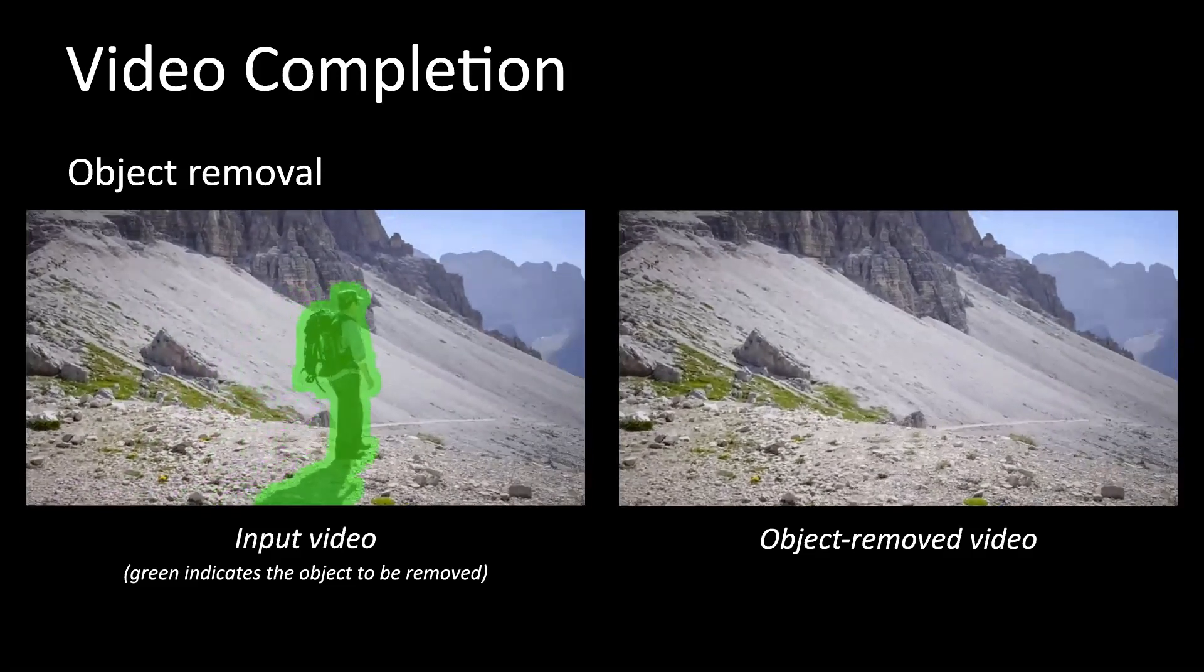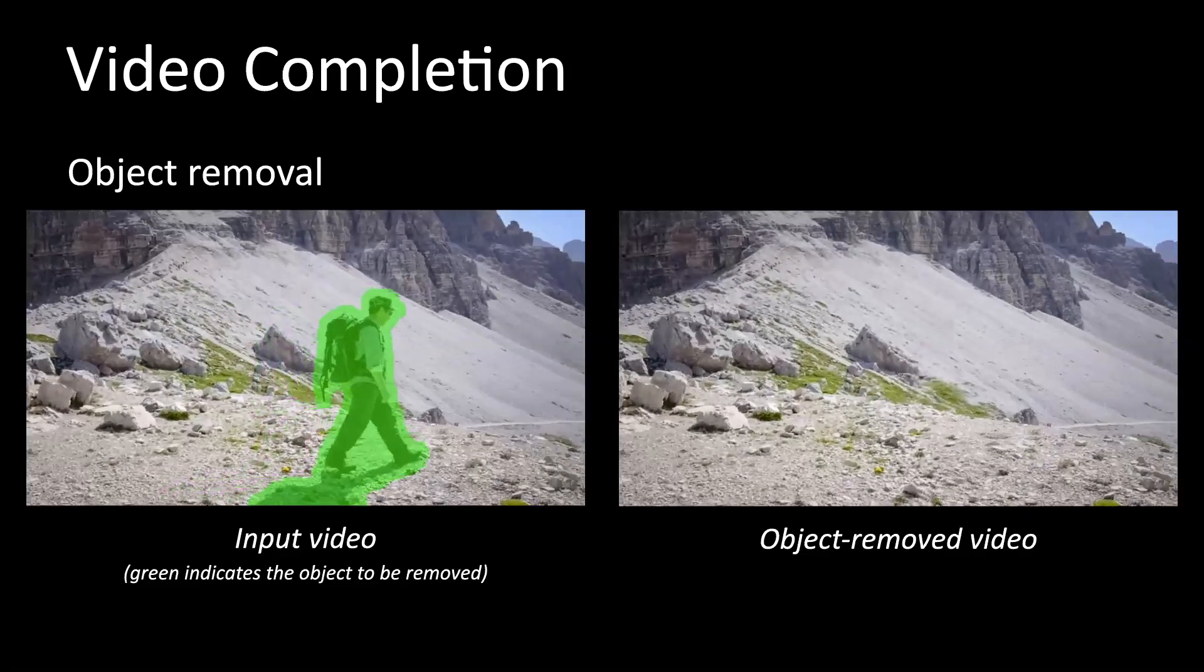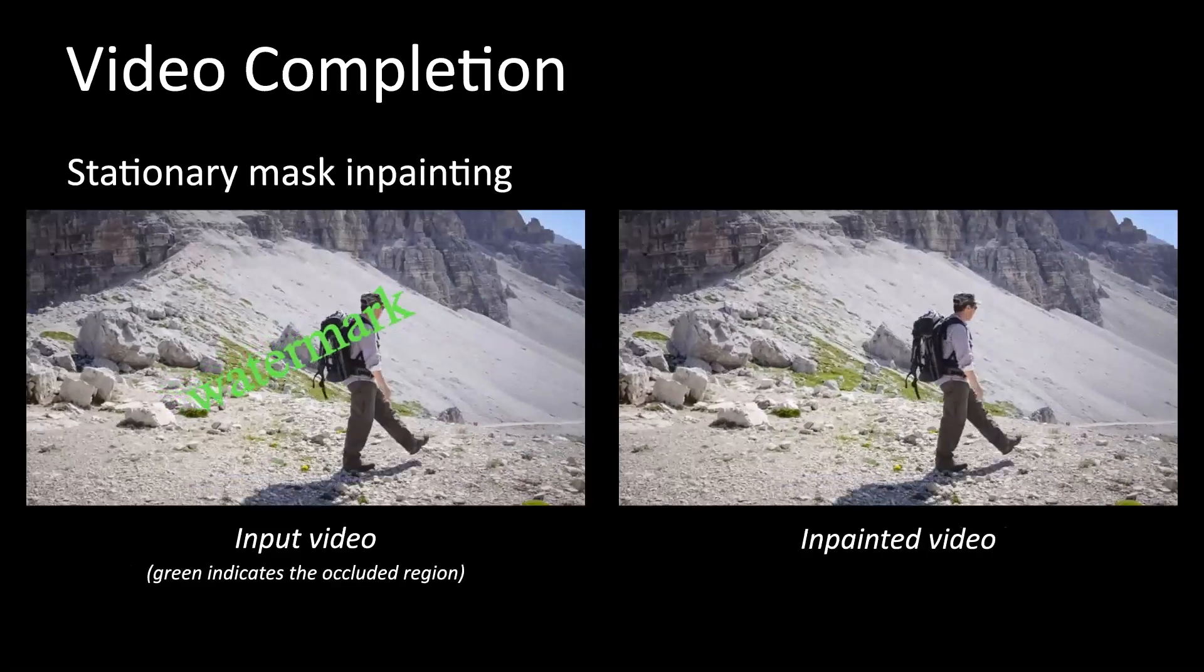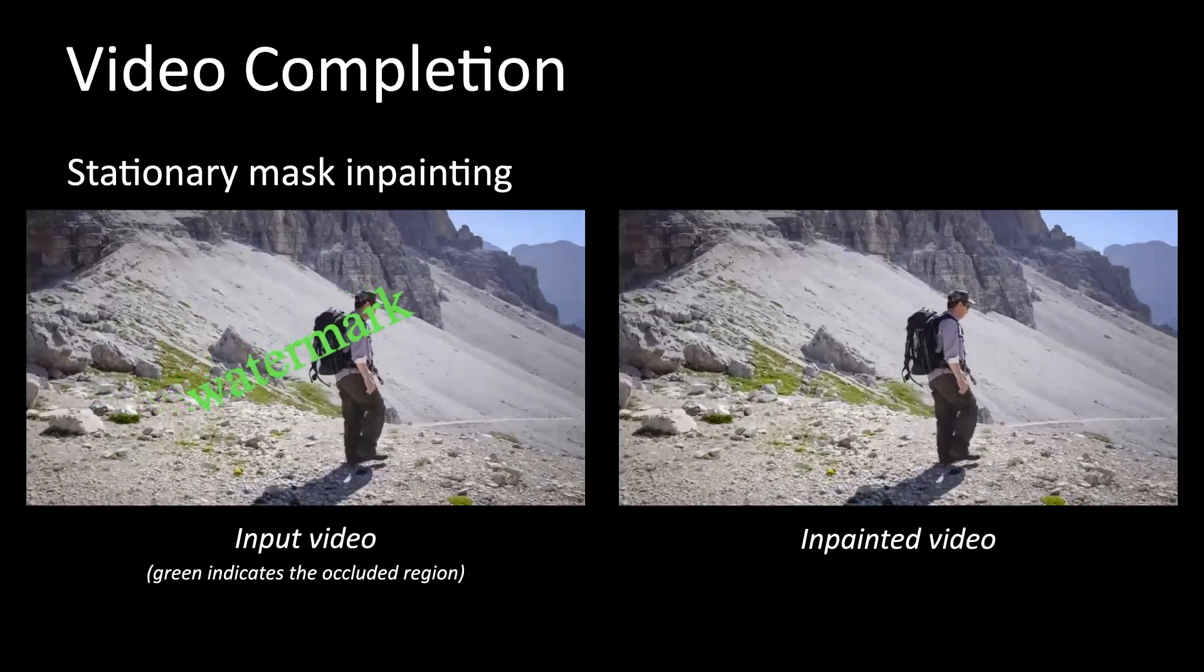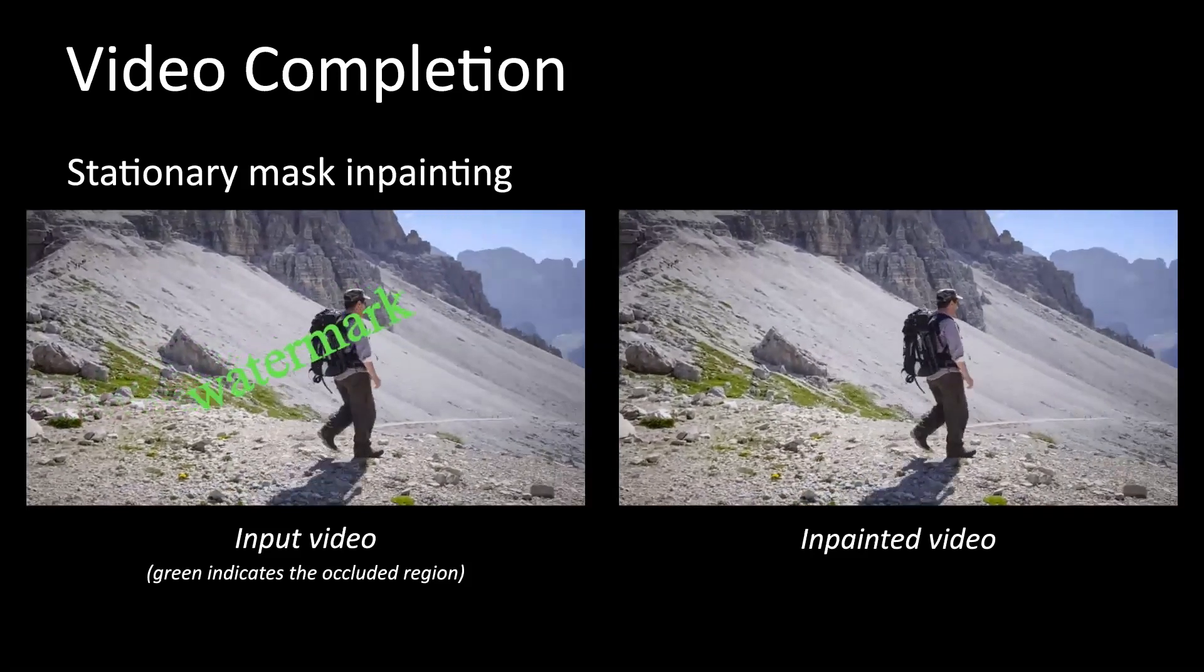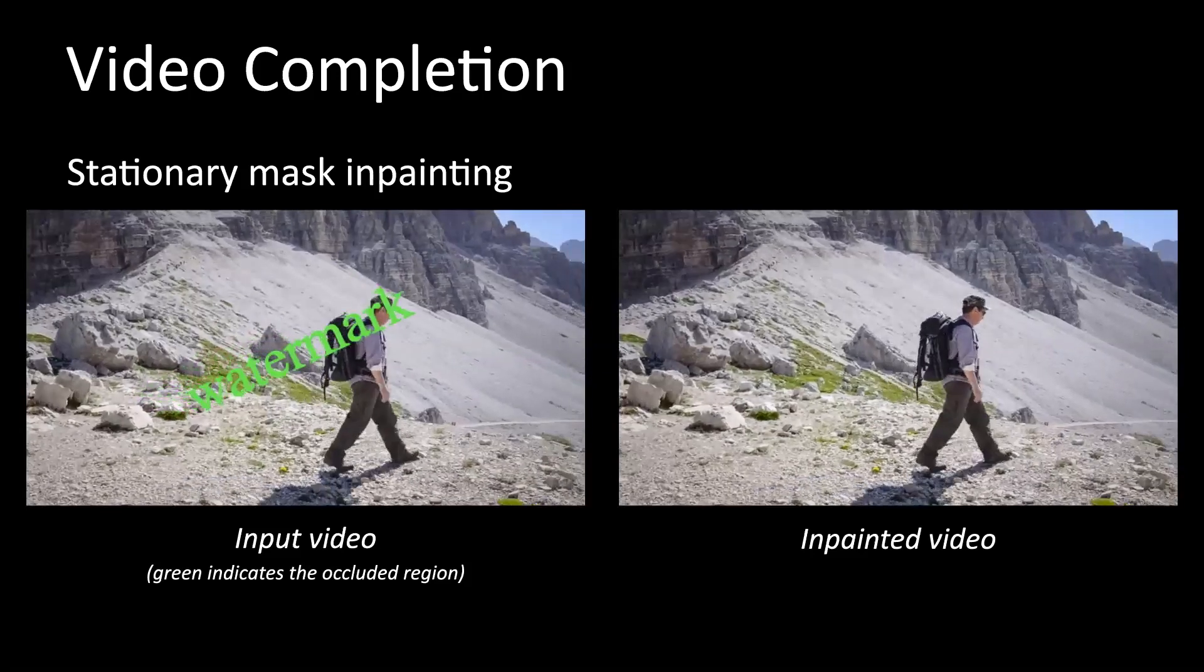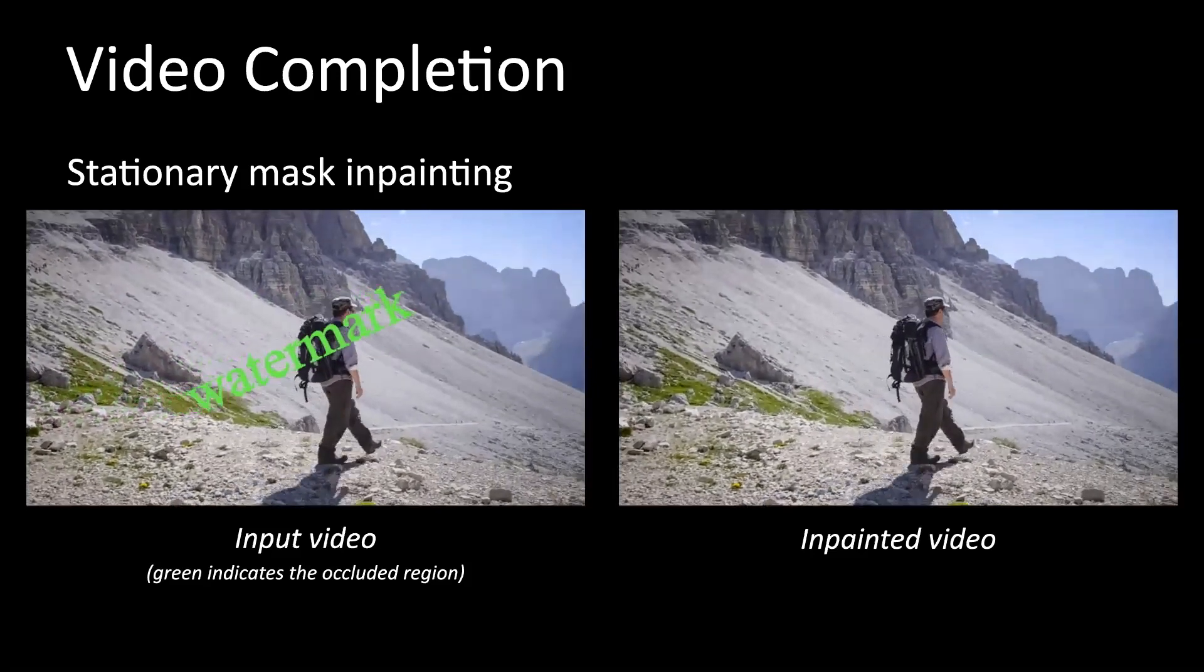The first one is object removal. We can track the unwanted object and completely remove it. The second category is stationary mask inpainting. The occluded region is at a fixed location. In this example, the video is corrupted by a watermark, which is placed at a fixed location. We want to inpaint the watermark region and recover the video.